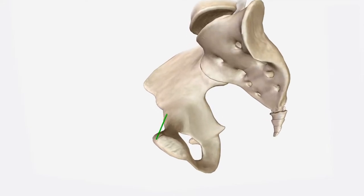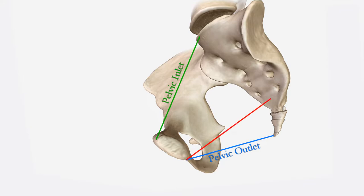The pelvis is described as having four imaginary planes: the plane of the pelvic inlet, also called the superior strait; the plane of the pelvic outlet, or the inferior strait; the plane of the mid-pelvis, which has the least pelvic dimension and is the most important clinically since instances of arrest or descent occur at this level; and the plane of the greatest pelvic dimension, where the fetal head rotates to the anterior position.